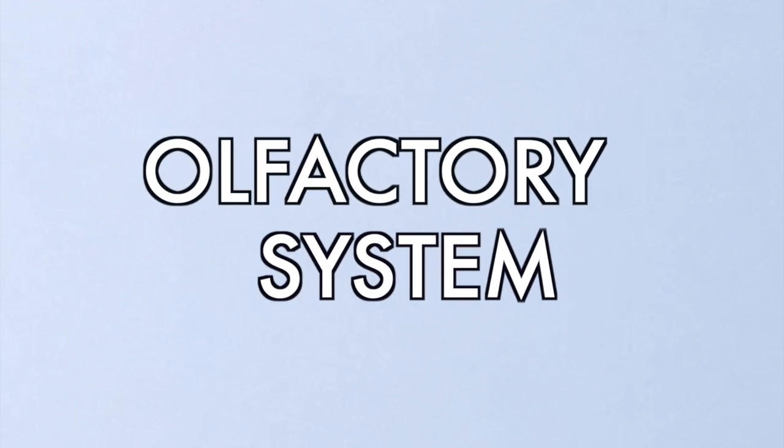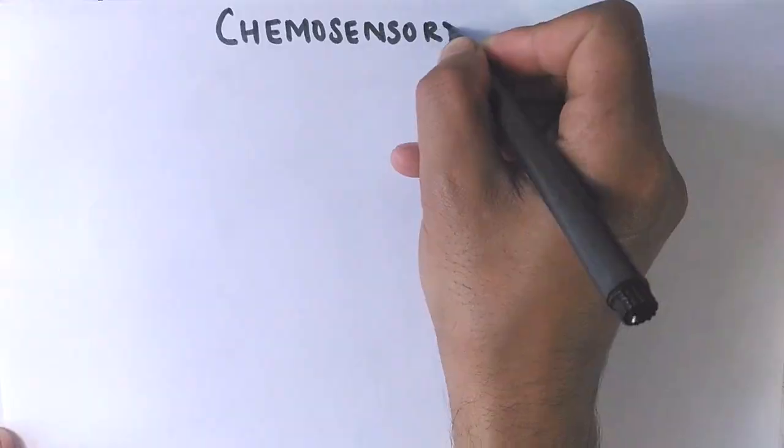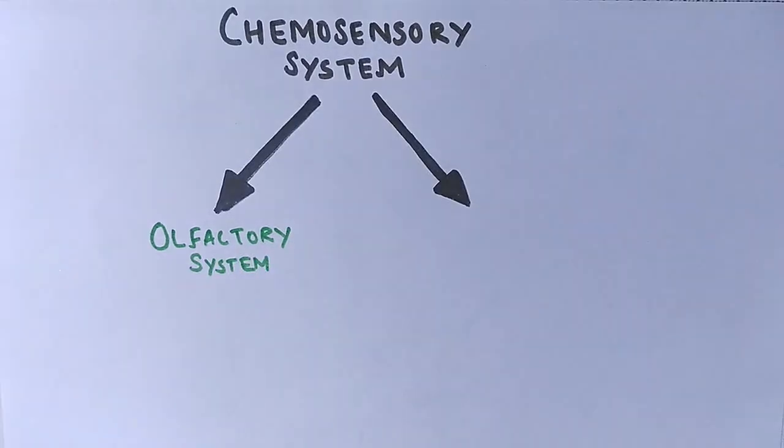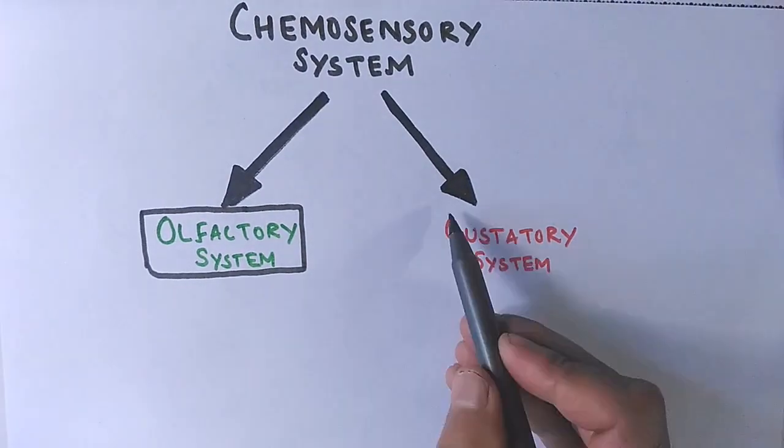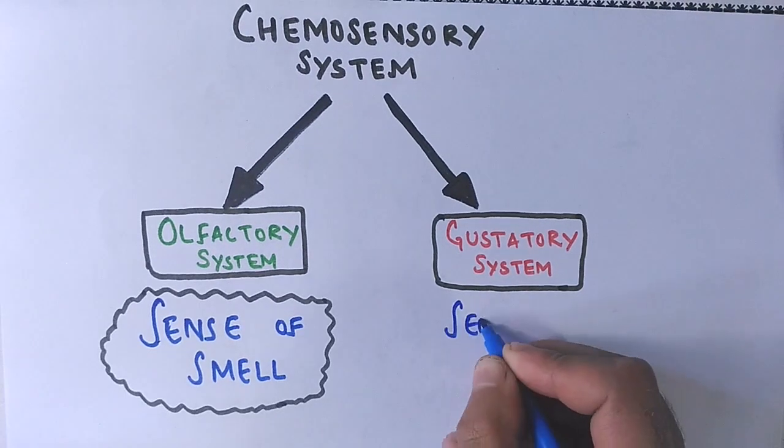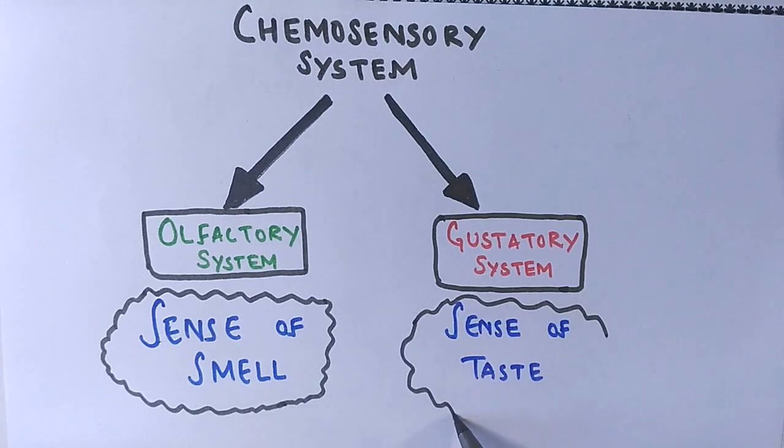Hello friends, in this video we will be discussing an overview of the olfactory system. This olfactory system is a part of the chemosensory system, which includes two sensory systems in the form of olfactory system and gustatory system. The olfactory system gives us the sense of smell while the gustatory system gives us the sense of taste.